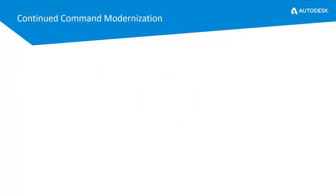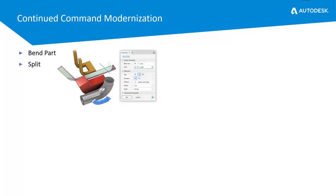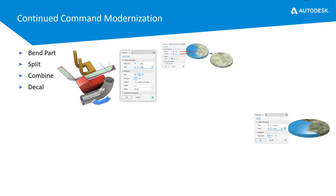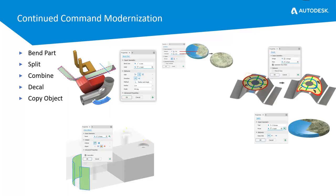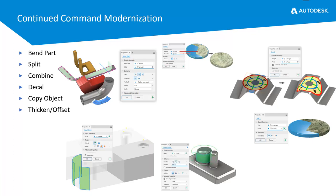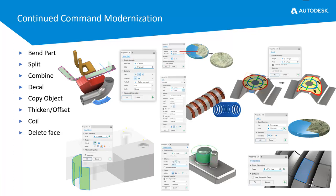Looking at continued command modernization: with the introduction of the hole tool in 2018 we saw a move to the panel interface, and a bunch of tools have now been added to this — like bend part, the split command, combine, decals, copy object, thick and offset, coil, and delete face.